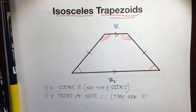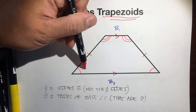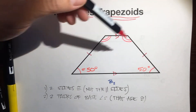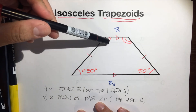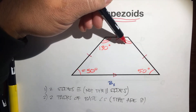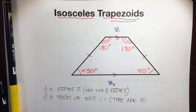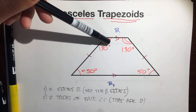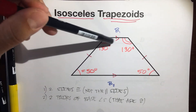For example, if this angle right here — it looks like an acute angle — let's say this angle is 50 degrees, then its base angle has to also be 50 degrees. And if you remember from the previous video, these two lines are parallel and this is a transversal, so these two are supplementary. So if this is 50, this has to be 130 degrees. And this angle right here also has to be 130 degrees because they're congruent, and these two are supplementary. All four angles add up to 360 because it's a quadrilateral, the two pairs of consecutive interior angles still add up to 180 degrees, and the two pairs of base angles are congruent.